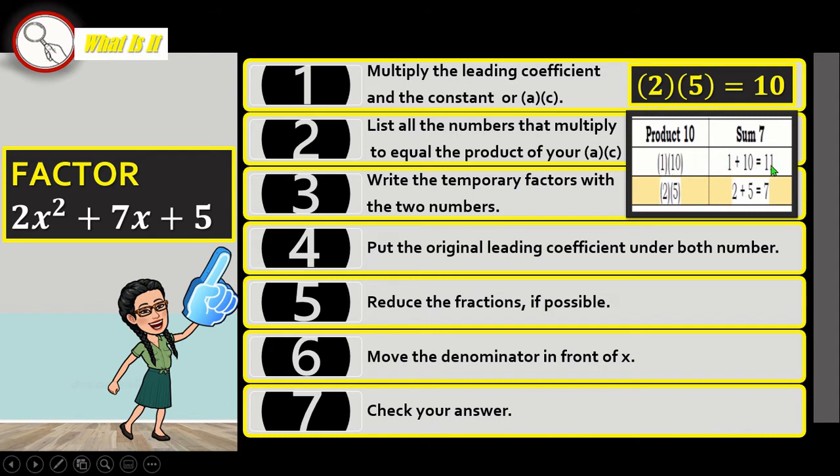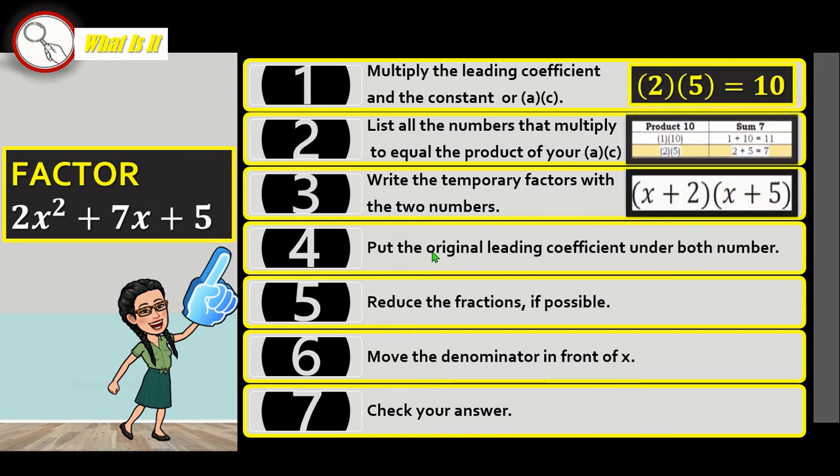And then when you add them, it should equal your middle term which is 7. So, 1 plus 10 is 11, 2 plus 5 is 7. Alright. So, we have here our 2 and 5 because it equals 7 which is the middle coefficient. Step 3: Write the temporary factors with the two numbers: X plus 2 and X plus 5.